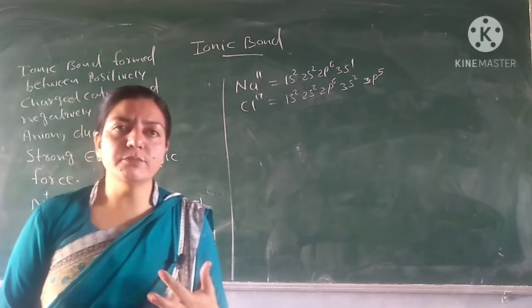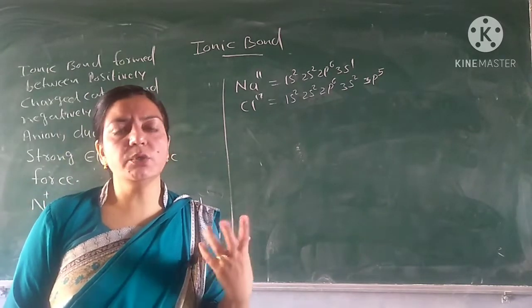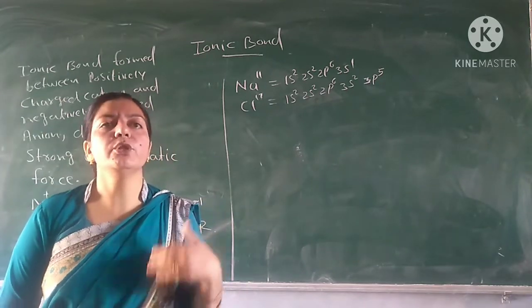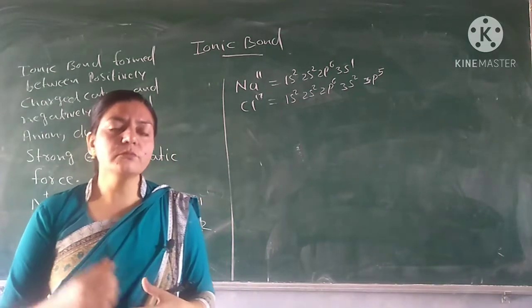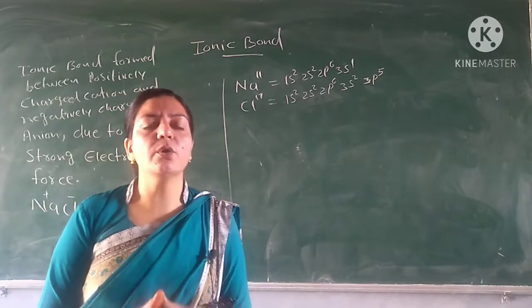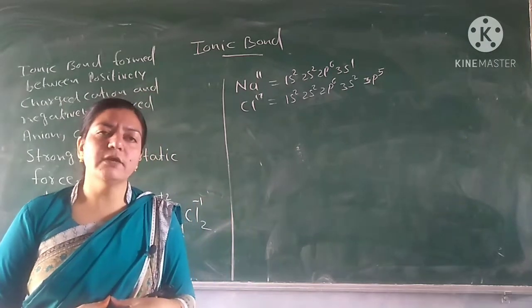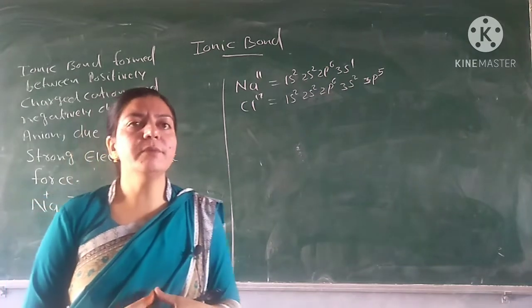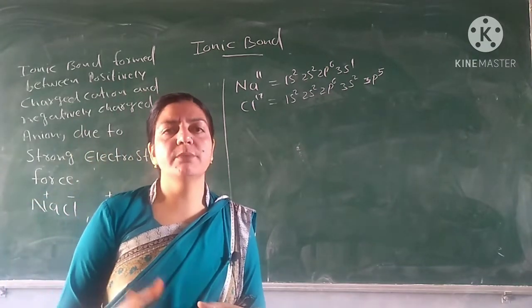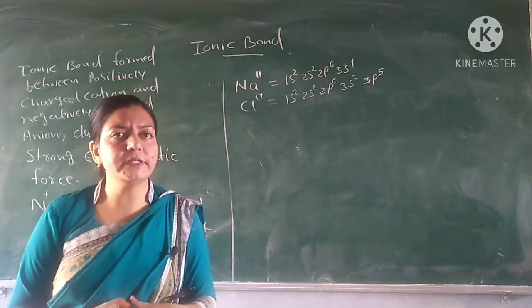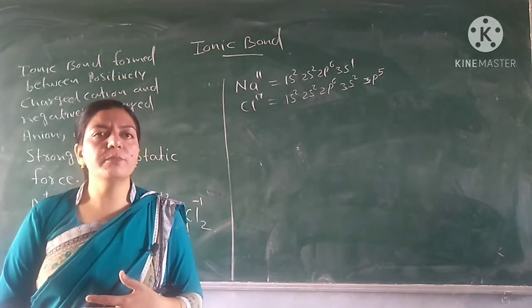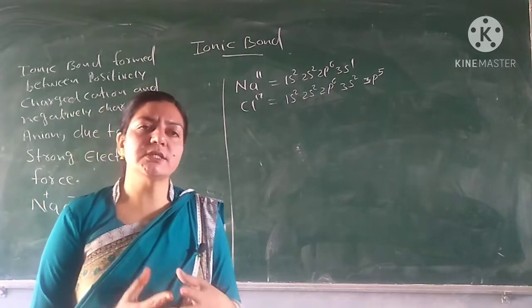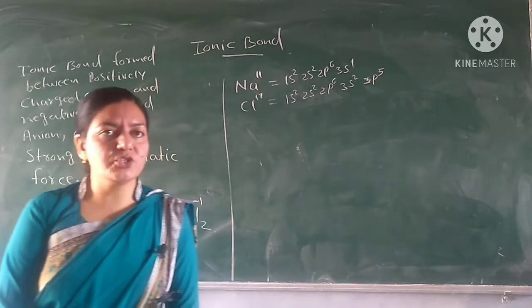Why do we have bonding? In Covalent Bonding, when we don't have a complete octet, according to their valency, some atoms share electrons through bonding. Lewis explained this concept of Covalent Bonding through Lewis structures.